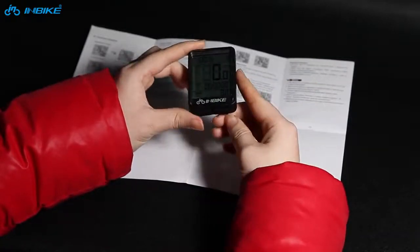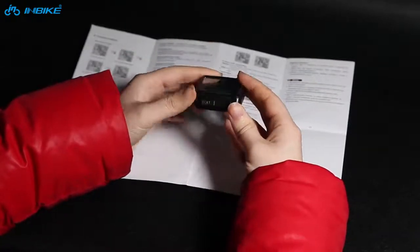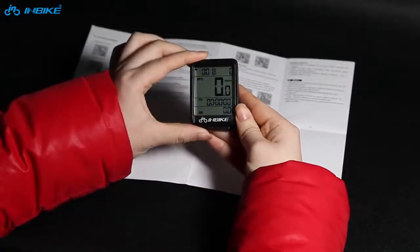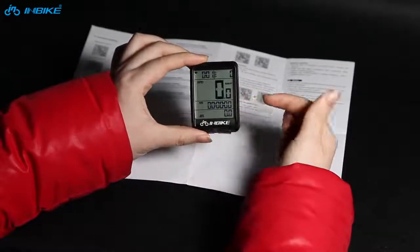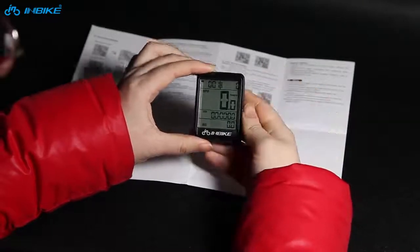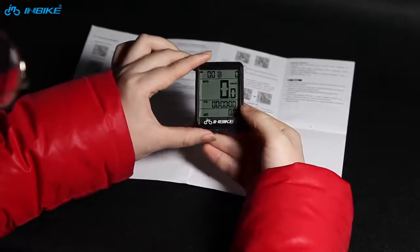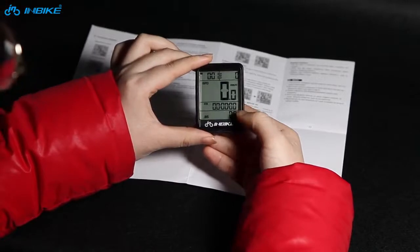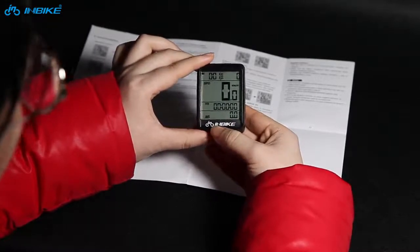Press the left key to switch to different function displays. Like this one is riding time and average speed.